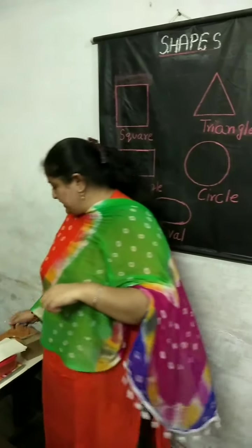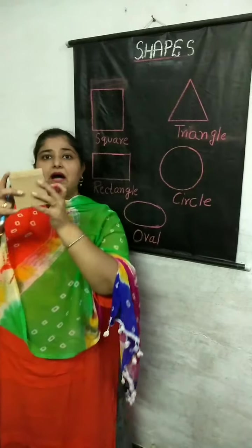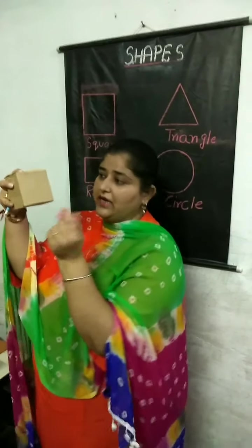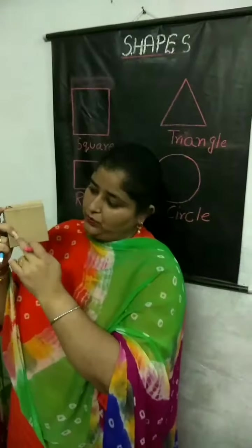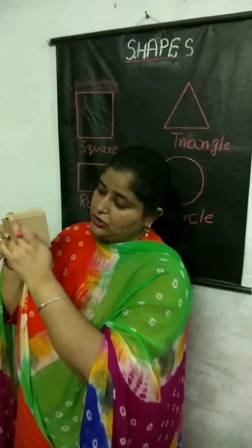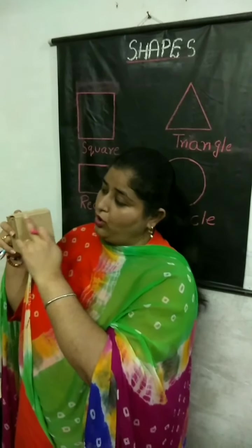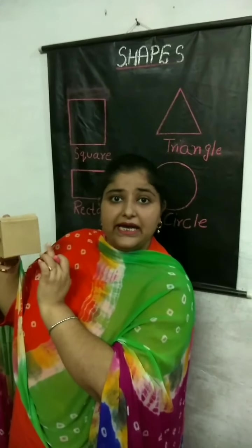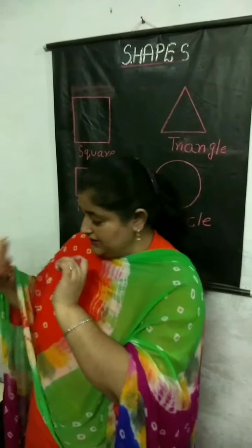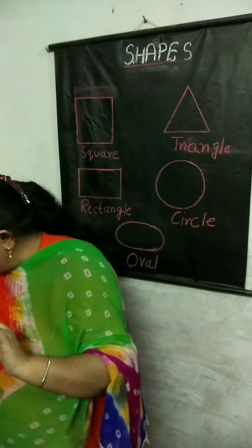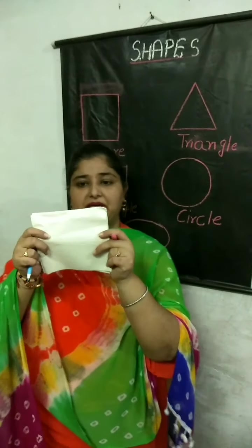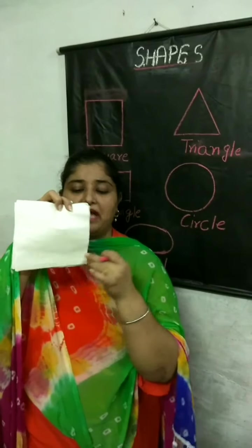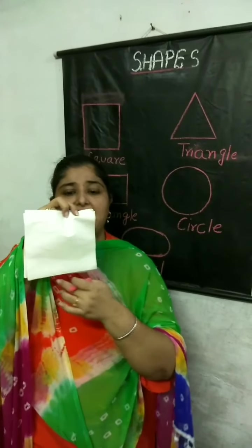I will give you an example. You could see a box here — this box also has four sides and all four sides are equal. In the same way, this is a paper napkin, and all the sides of this paper napkin are also the same.